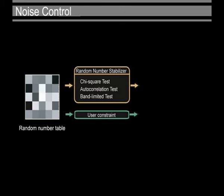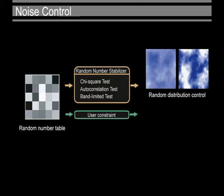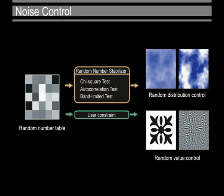We generate two types of the noise control method: the random distribution control to control the contrast of the noise function, and the random value control to control the noise value itself.